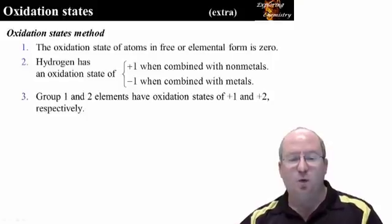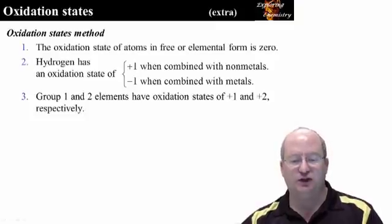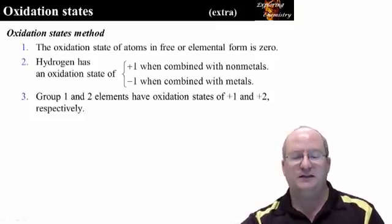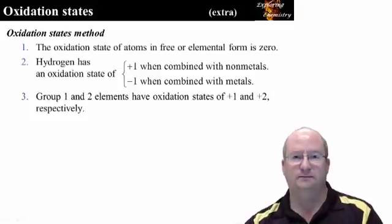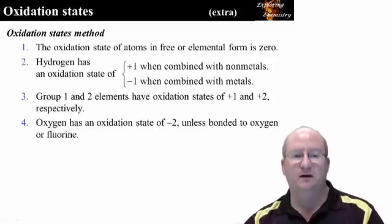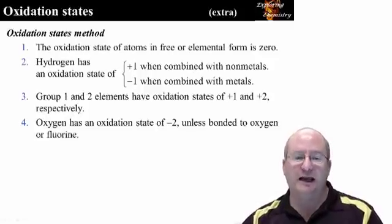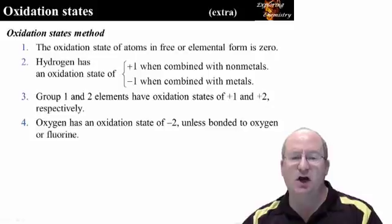Groups one and two on the periodic table have oxidation states of plus one and plus two respectively. These are the charges on these elements. Now we're looking at elements which can have different oxidation states. The first one is oxygen. Oxygen has an oxidation state of minus two unless it is bonded to another oxygen atom or to a fluorine atom.